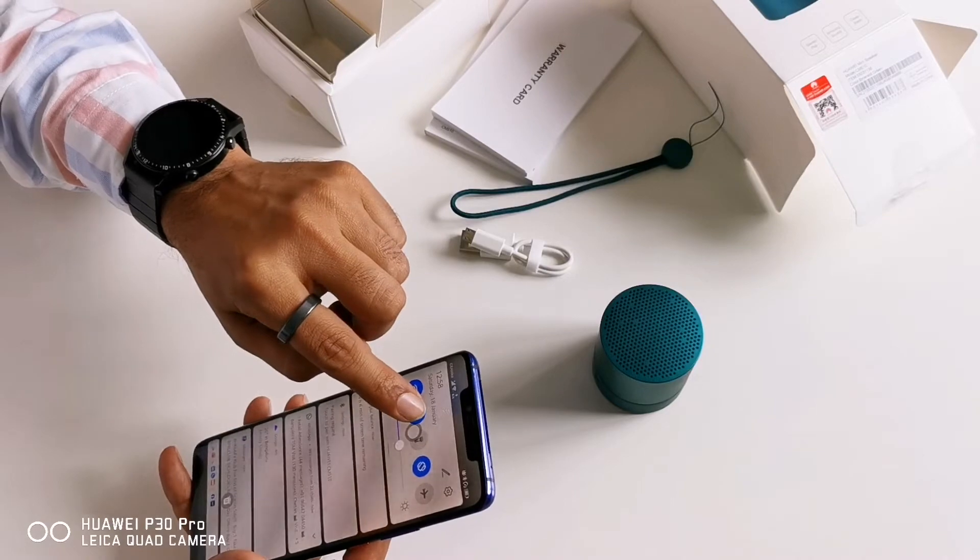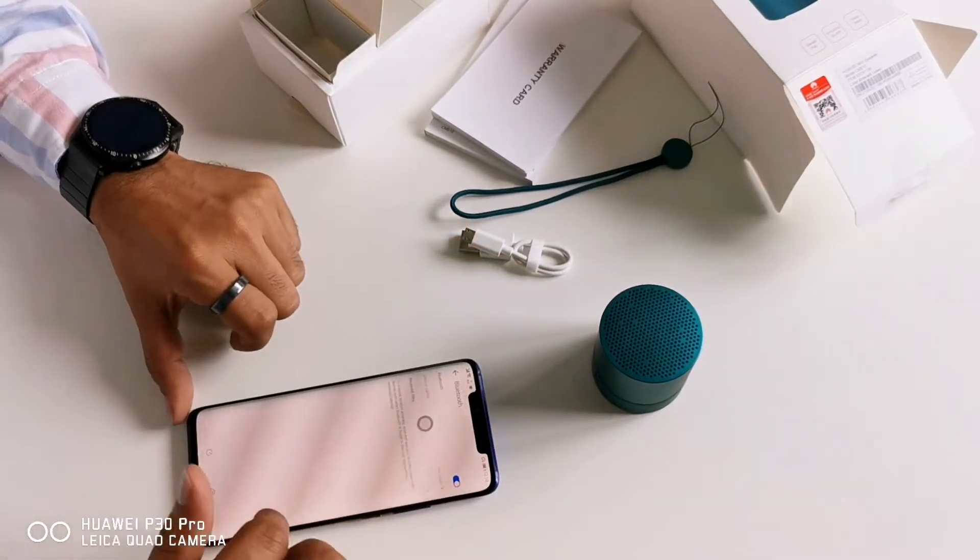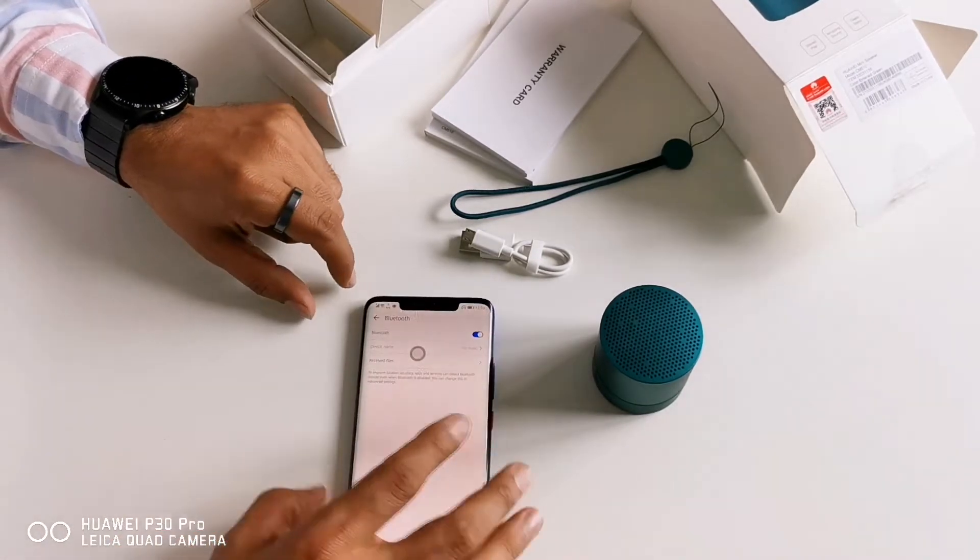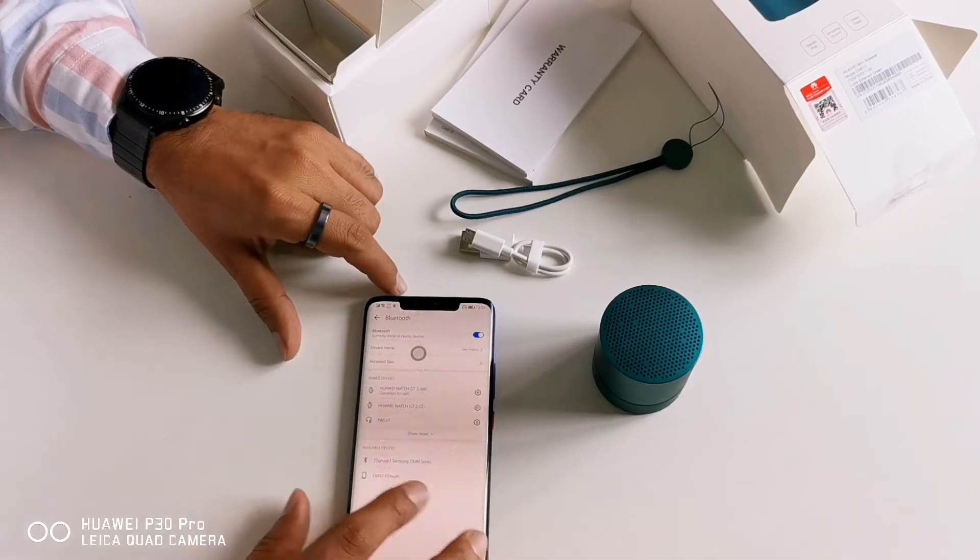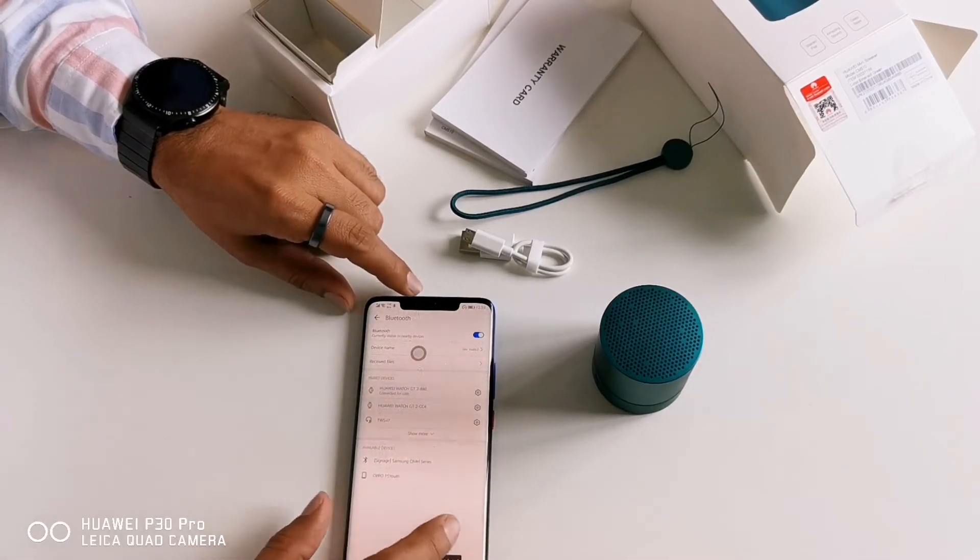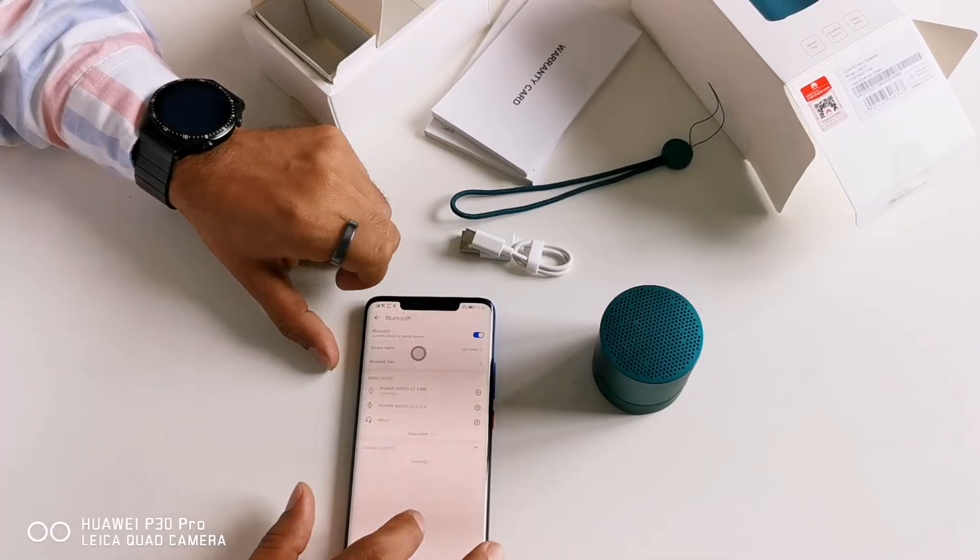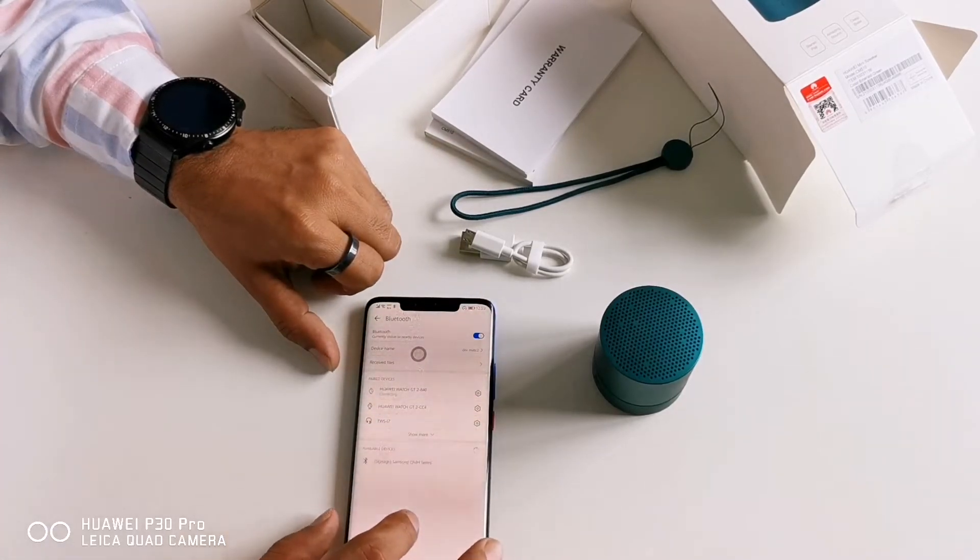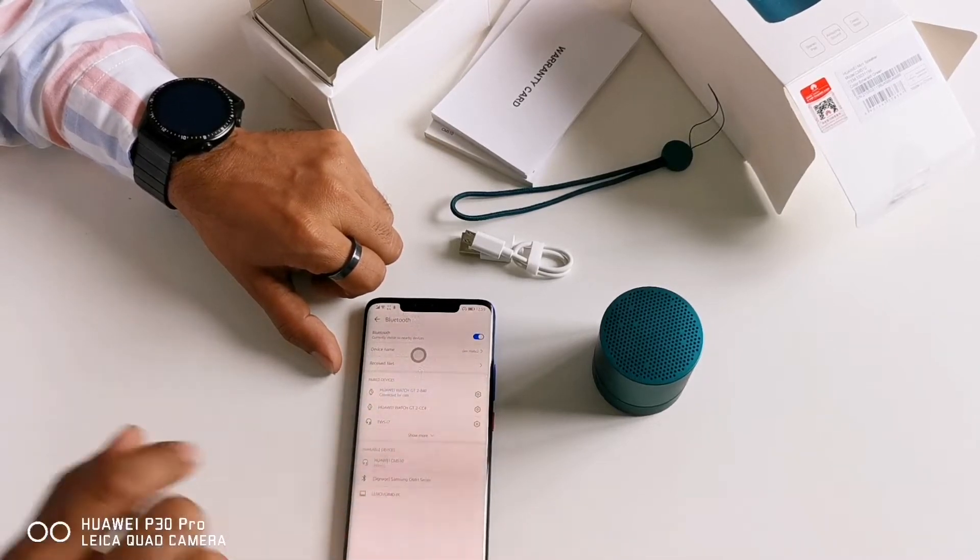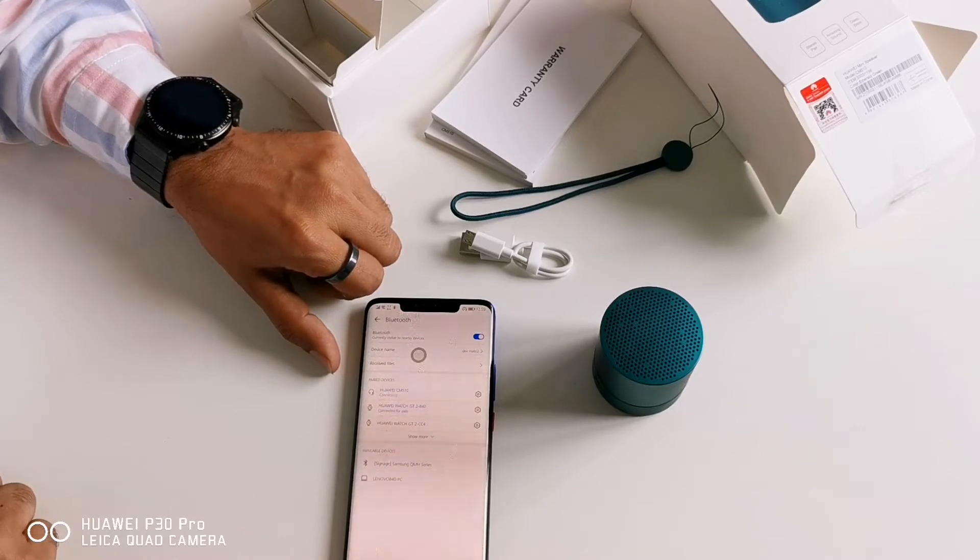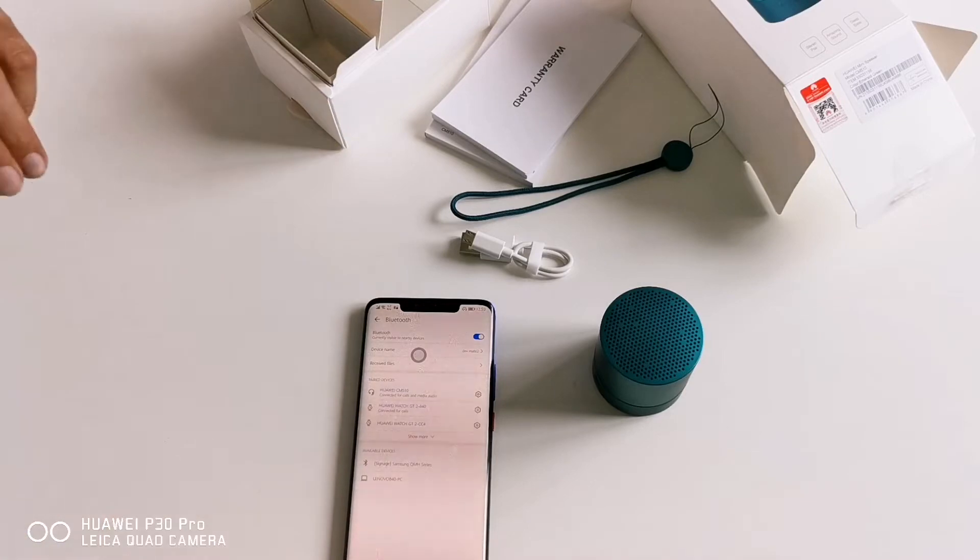...go to Bluetooth settings, turn on Bluetooth on your phone. It is searching for the devices. And from here you can find Huawei CM510. Just tap it. It's a very small sound. It shows now your device is connected.